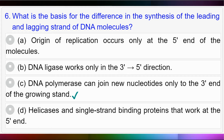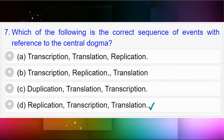Question number six: What is the basis for the difference in the synthesis of the leading and lagging strand of DNA molecules? Option A: origin of replication occurs only at the 5' end; option B: DNA ligase works only in the 3' to 5' direction; option C: DNA polymerase can join new nucleotides only to the 3' end of the growing strand; option D: helicases and single-strand binding proteins work at the 5' end. Answer to question number six is option C: DNA polymerase can join new nucleotides only to the 3' end of the growing strand.